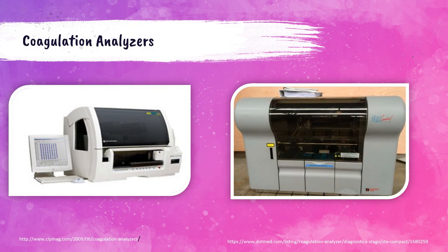There are two different kinds of coagulation analyzers. The ACL Top on the left and the STAGO on the right both perform tests like PT, PTT, D-dimer, fibrinogen, etc. The main difference is their methodology. The STAGO uses a mechanical clot method: the patient's plasma aliquot contains a tiny magnetic ball that rocks inside the tube, and when a clot forms the ball stops moving — the time recorded is the result. The ACL Top uses a photo-optical turbidimetric method. Both produce very reliable and accurate results and are easy to use.